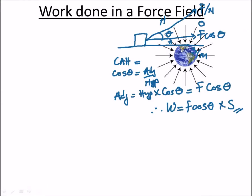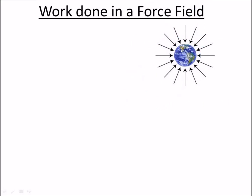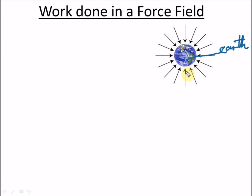Now let's look at how to get the work done in a force field. A force field can be likened to the earth's gravitational field. In the earth's gravitational field, there is always a force that pulls a body towards the center of the earth — that's why whenever you throw something up, it always comes down. We define the weight of a body as the force of attraction on the body due to the earth's gravitational field, and this weight acts downward.